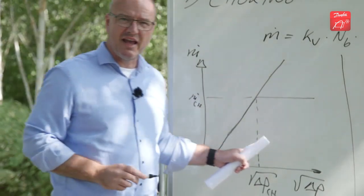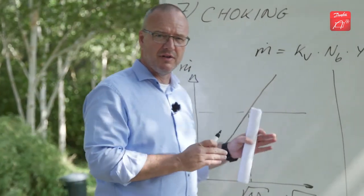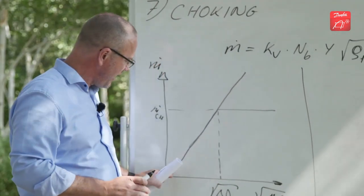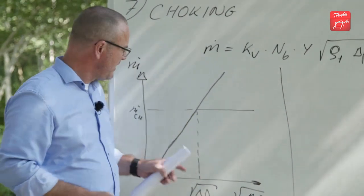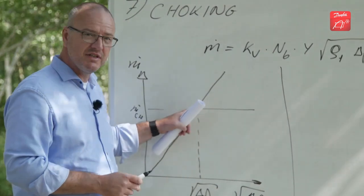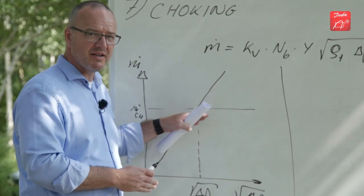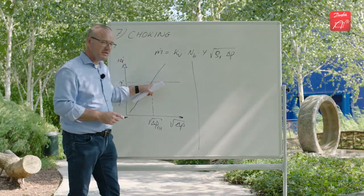So what this indicates is that if you have a valve in a real system and you increase the pressure drop across the valve, then at some point increasing the pressure drop will not give you extra mass flow. So what is the reason for this?